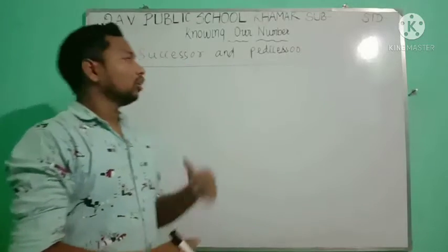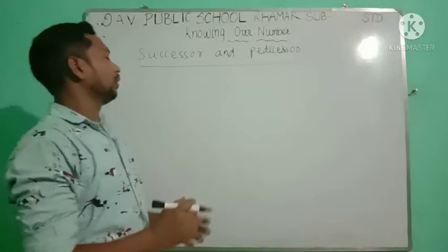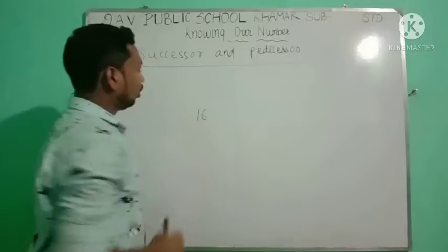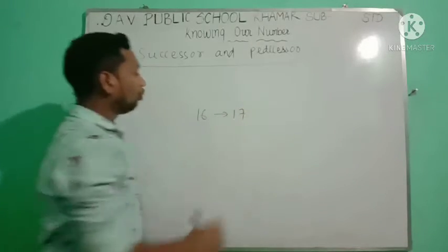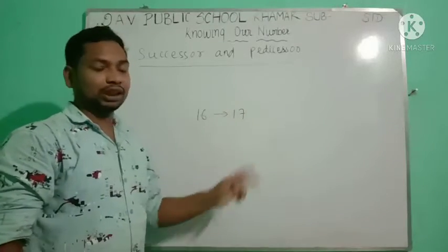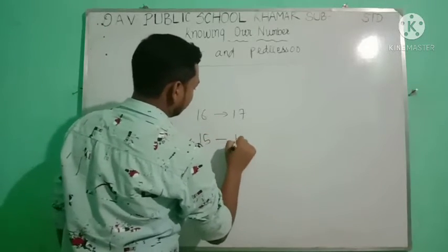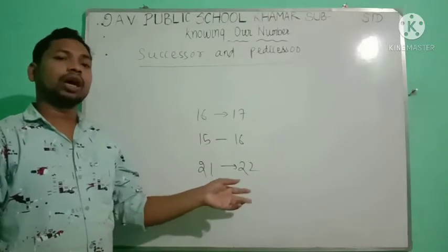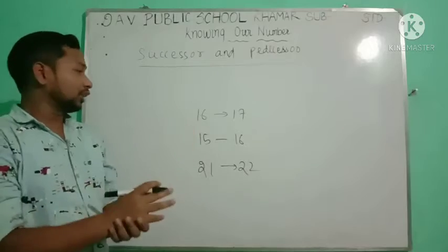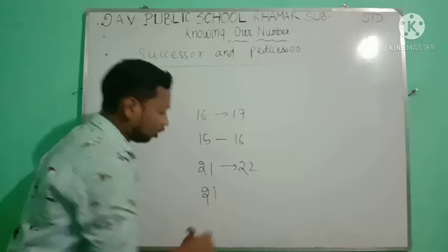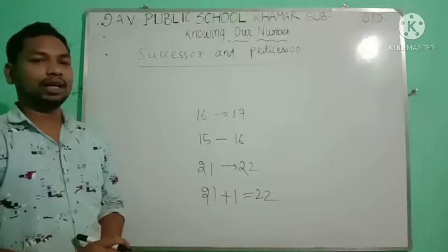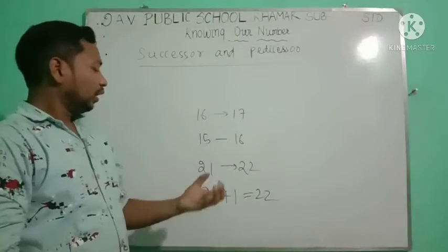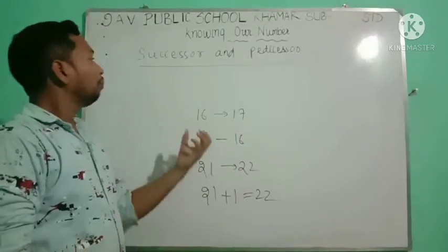Now we are going to discuss about successor and predecessor of any number. Successor means the number which comes just after. For example, the successor of 16 is 17. The successor of 15 is 16, and the successor of 21 is 22. If you add one to any number, you get the successor of that number. If you subtract one from any number, you get the predecessor of that number.